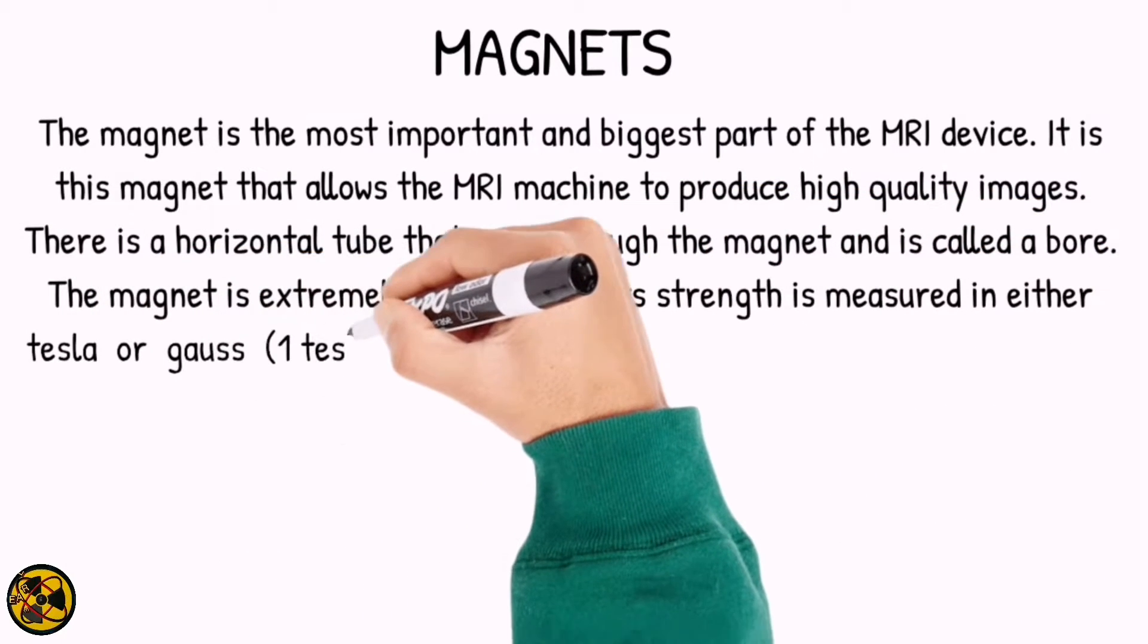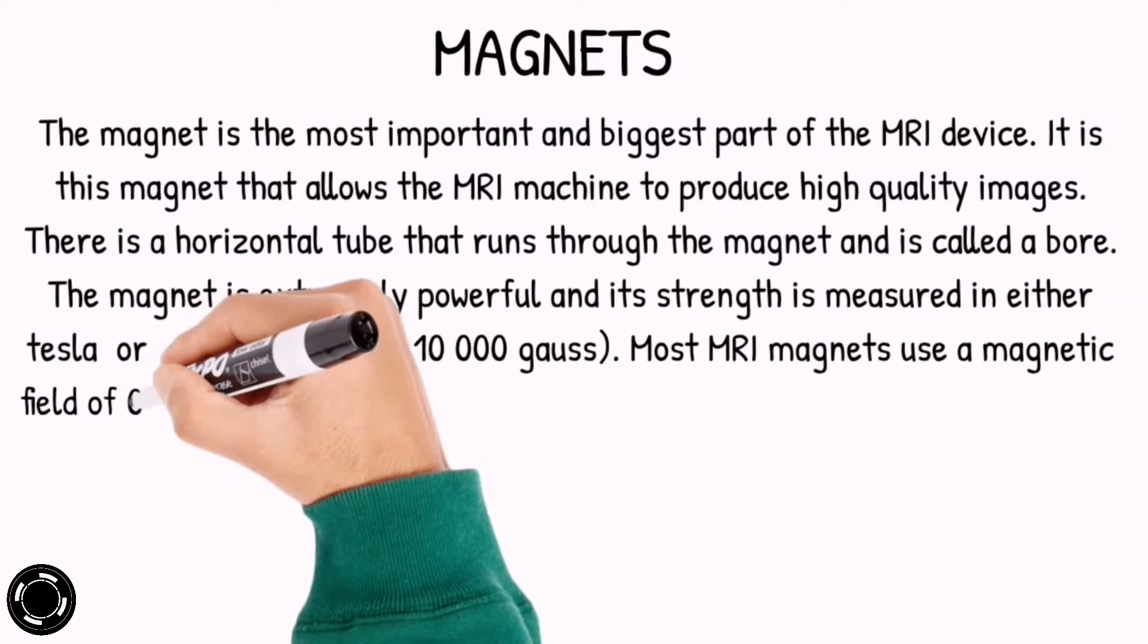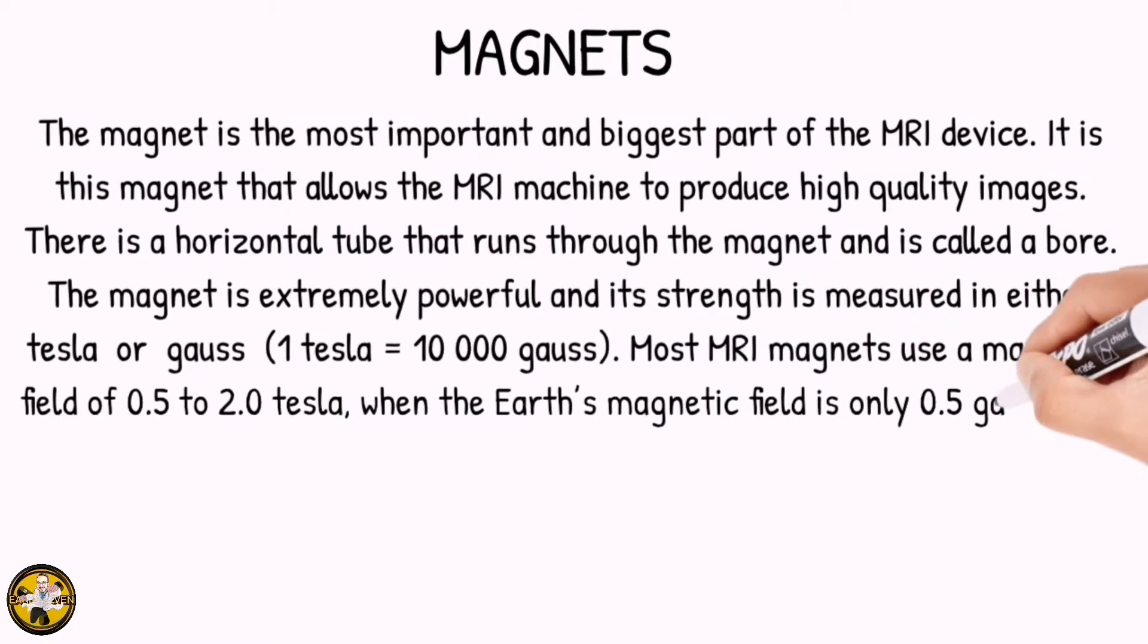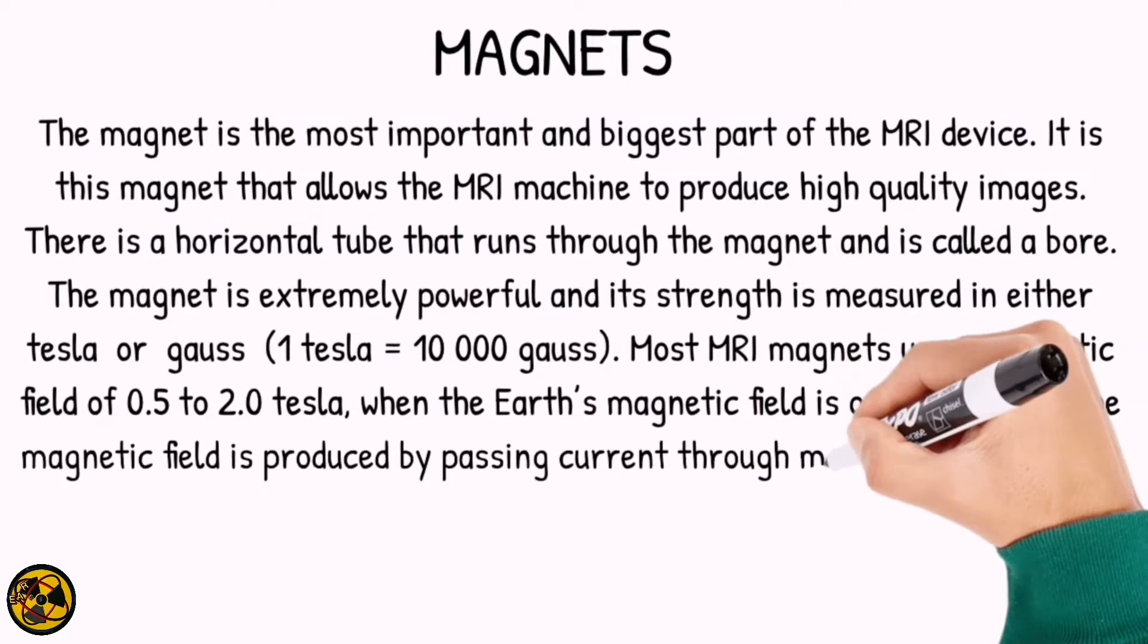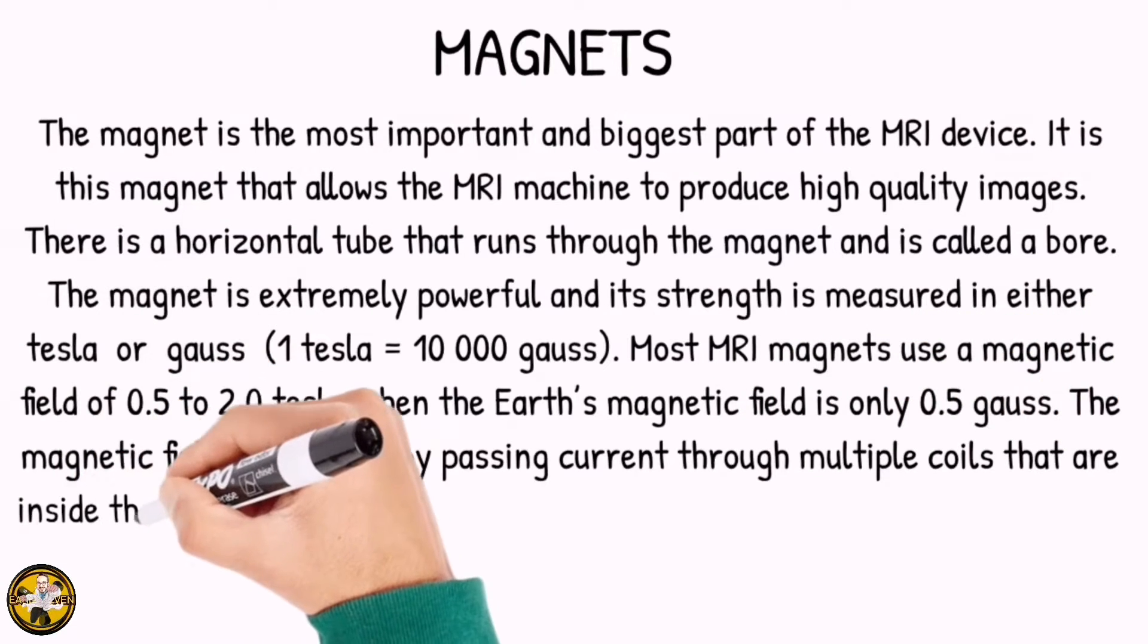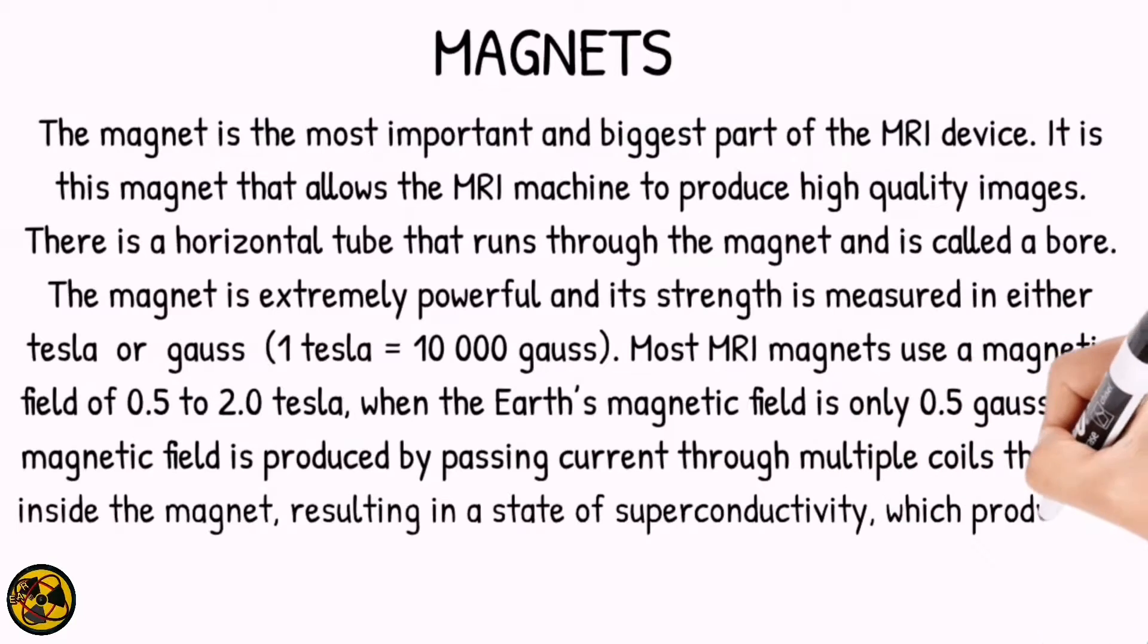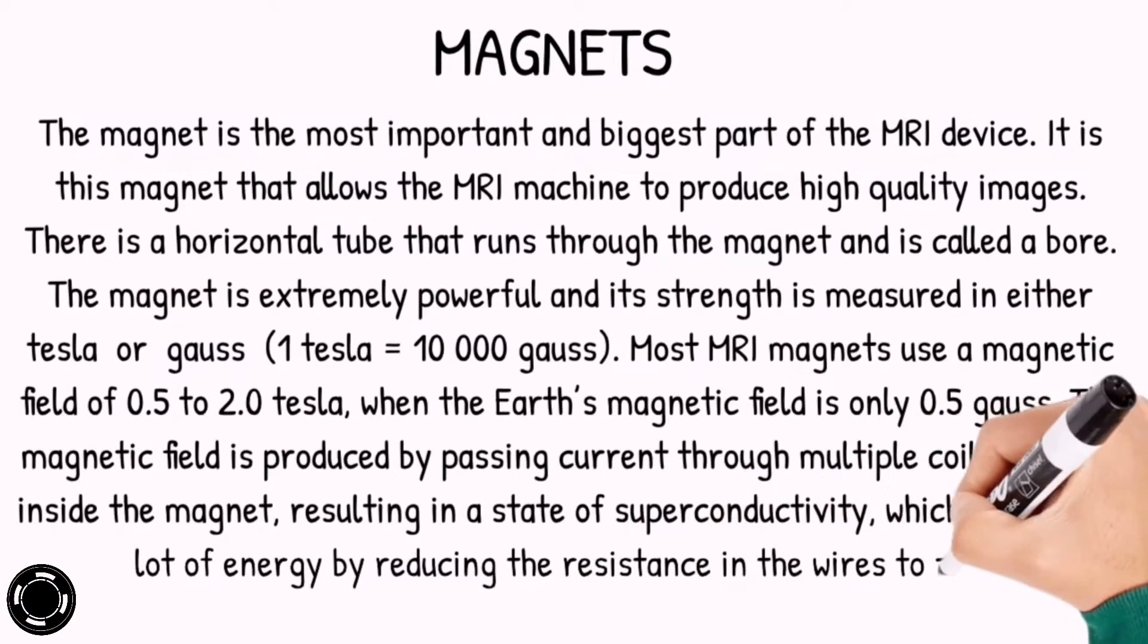The magnet is extremely powerful, and its strength is measured in either Tesla or Gauss. Most MRI magnets use a magnetic field of 0.5 to 2.0 Tesla, when the Earth's magnetic field is only 0.5 Gauss. The magnetic field is produced by passing current through multiple coils that are inside the magnet, resulting in a state of superconductivity which produces a lot of energy by reducing the resistance in the wires to zero.